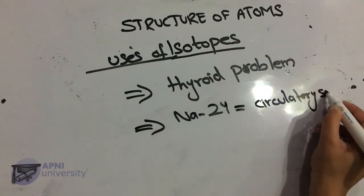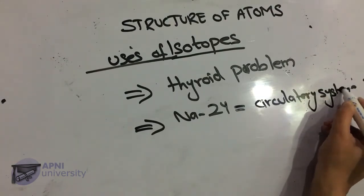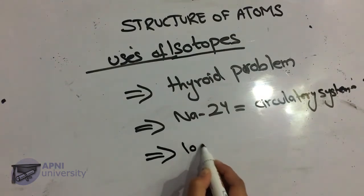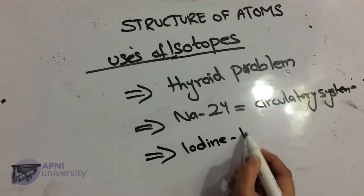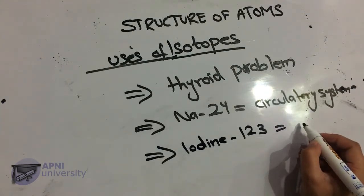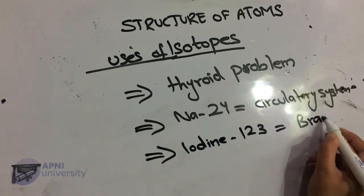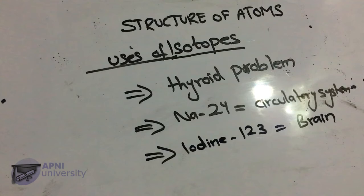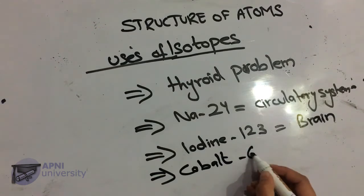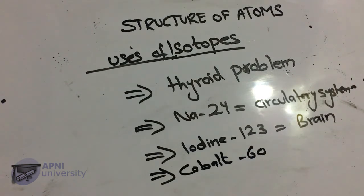NA-24 is used to trace the flow of blood and detect possible constrictions or obstructions in the circulatory system. Iodine-123 is used to image the brain and in different diagnostic processes related to the brain.